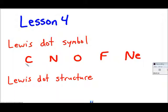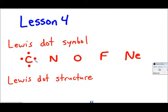Carbon has 6 electrons: 2 in the first shell, 4 in the second shell. So carbon has 4 outer electrons. I put those 4 outer electrons around it on each of the 4 sides — one on top, one on the left, one on the bottom, one on the right — showing that carbon has 4 valence electrons.